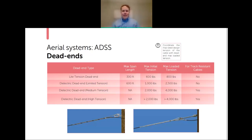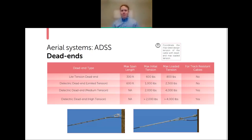One note on dead ends: max loaded tension ranges from as low as 800 pounds up to over 4,000 pounds. We recommend matching the max rated design tension of the cable with the max loaded tension of the dead end. If your design calls for a 2,500-pound dead end but the cable is rated for 3,000 or 3,500 pounds, match the dead end to the cable rating to keep it uniform and err on the side of caution.